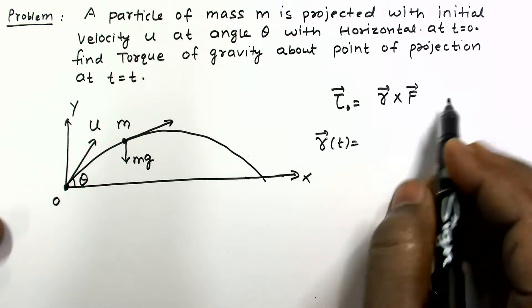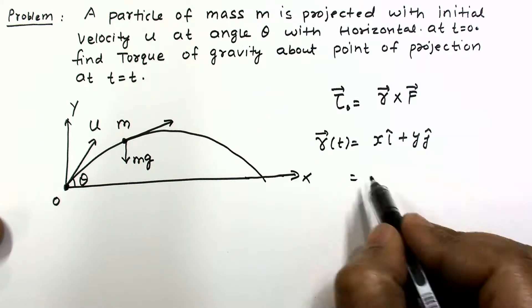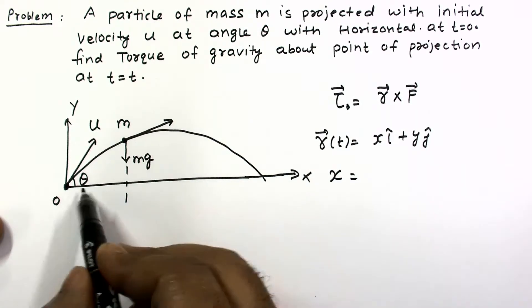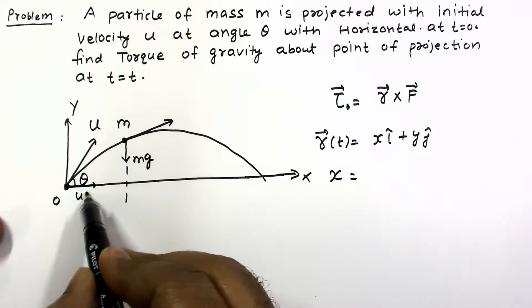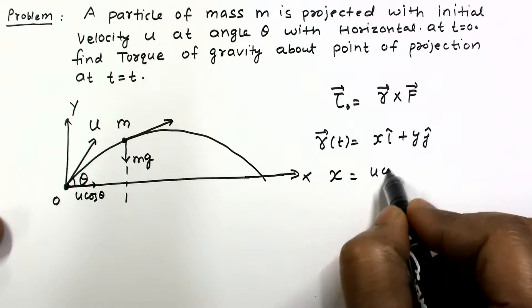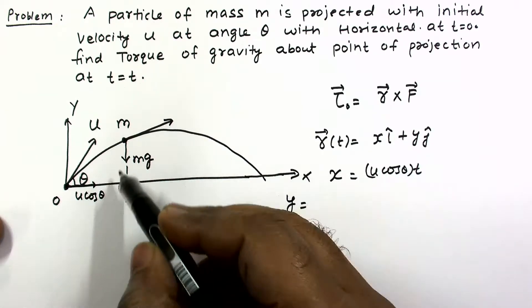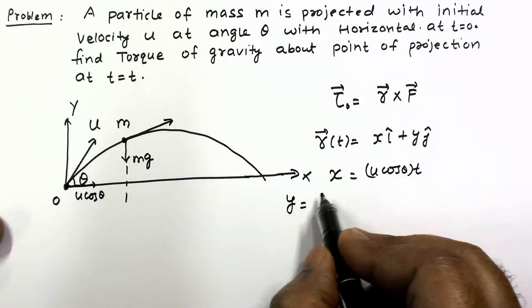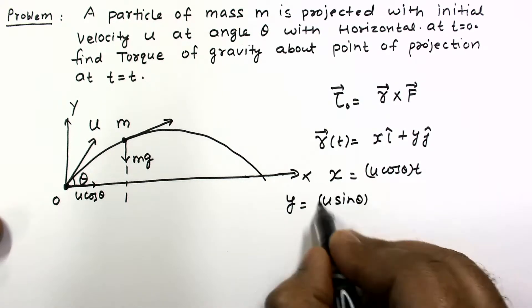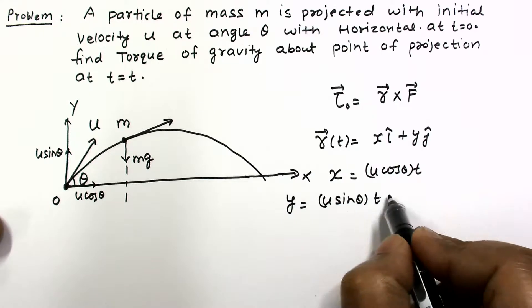At any time t we need to know the x and y coordinates. The x-coordinate: since there is no acceleration in the x-direction, x equals u·cosθ·t. For the y-coordinate, there is uniform acceleration downward, so using s = ut + ½at², the y-coordinate is u·sinθ·t minus ½g·t².